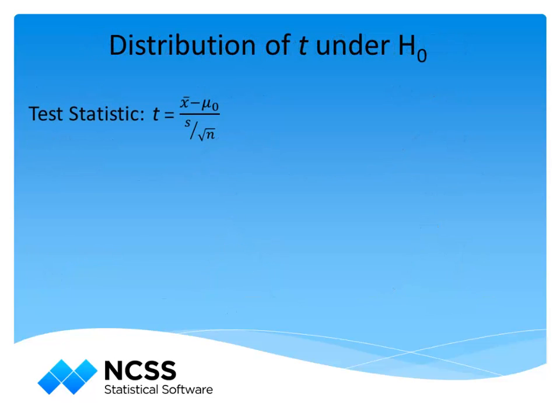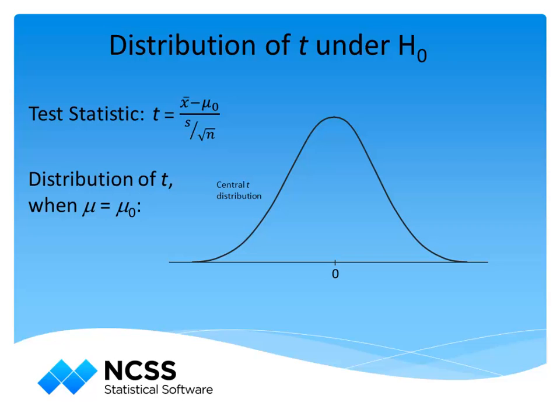The test statistic for this test is the t-statistic, which is based on the mean and has a known distribution which in turn permits the assignment of probabilities corresponding to its various values. Under the null hypothesis, the t-statistic follows a central t-distribution.